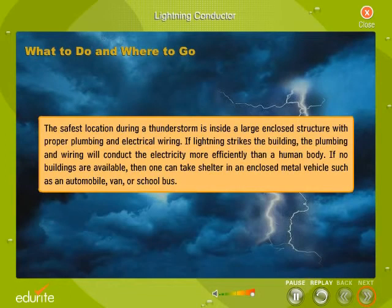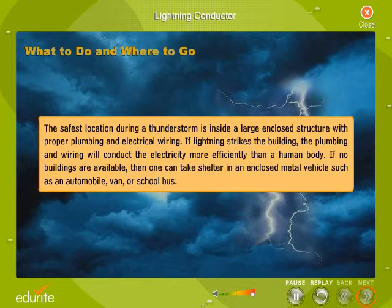The safest location during a thunderstorm is inside a large enclosed structure with proper plumbing and electrical wiring. If lightning strikes the building, the plumbing and wiring will conduct the electricity more efficiently than a human body. If no buildings are available, then one can take shelter in an enclosed metal vehicle, such as an automobile, van or school bus.